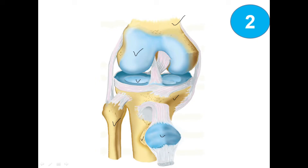Next we can talk about the fibrocartilage meniscus. This side is the medial meniscus, and this one is the lateral meniscus.